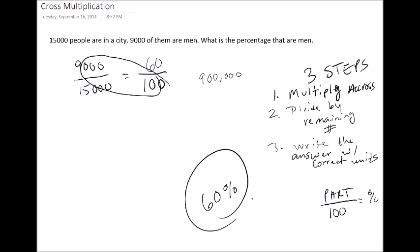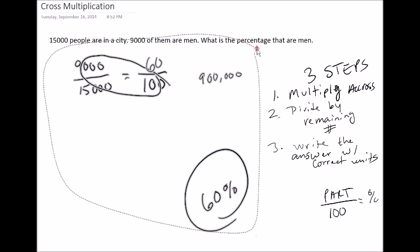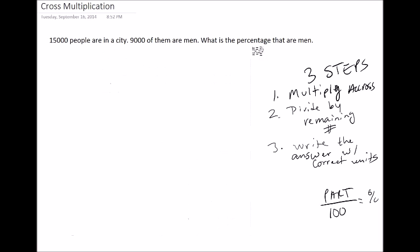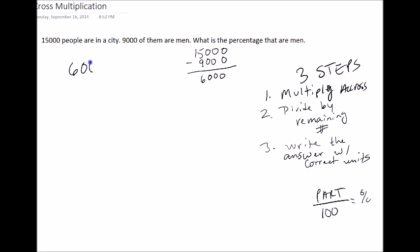So for instance, if we were to find out the percentage of this city which were female, all we would have to do is figure out first how many are female. The amount of female in the city is equal to 15,000 minus 9,000, which is 6,000. So 6,000 is our part. 15,000 is our whole.